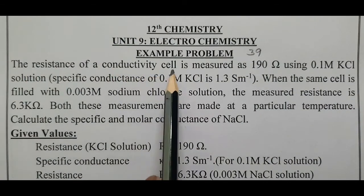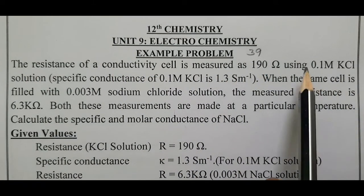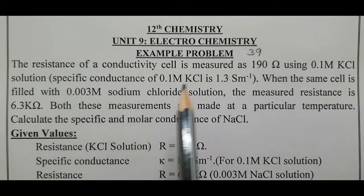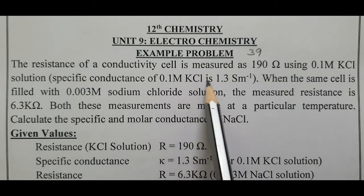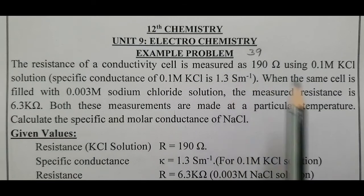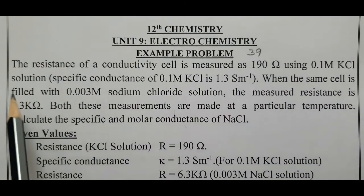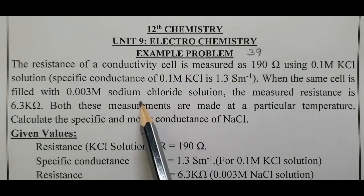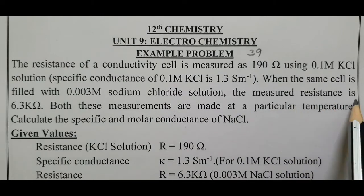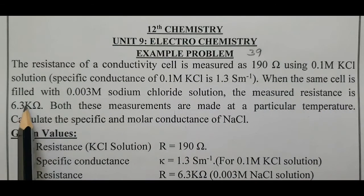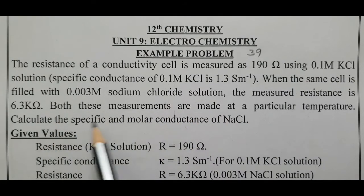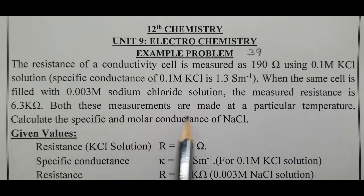The resistance of a conductivity cell is measured as 190 ohm using 0.1 molar KCl solution. The specific conductance κ of 0.1 molar KCl is 1.3 Siemens per meter. When the same cell is filled with 0.003 molar sodium chloride solution, the measured resistance is 6.3 kilo ohm. Both measurements are made at a particular temperature. Calculate the specific conductance κ and molar conductance Λ_M of sodium chloride.